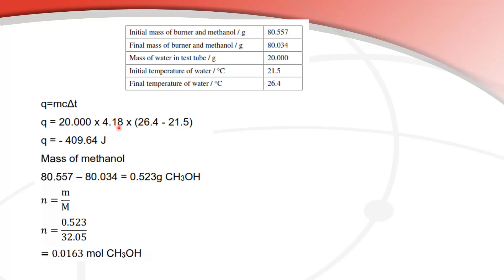Next is the specific heat capacity of water which is 4.18 and then the change in temperature. I've put it like this because I can keep my final answer to three significant figures and when I do the math I end up with negative 409.64 joules.